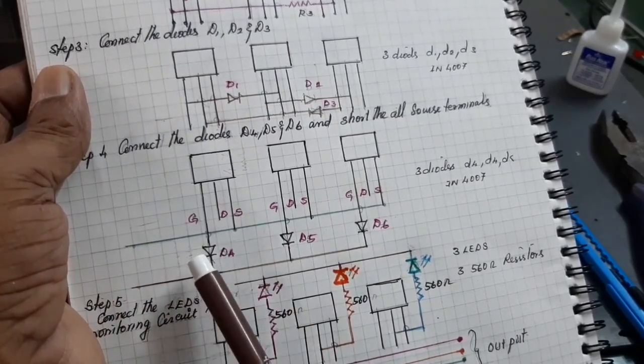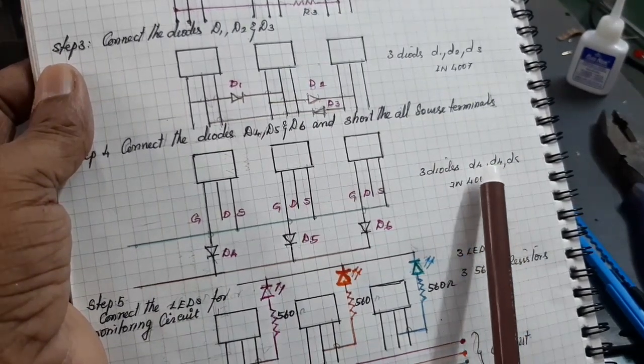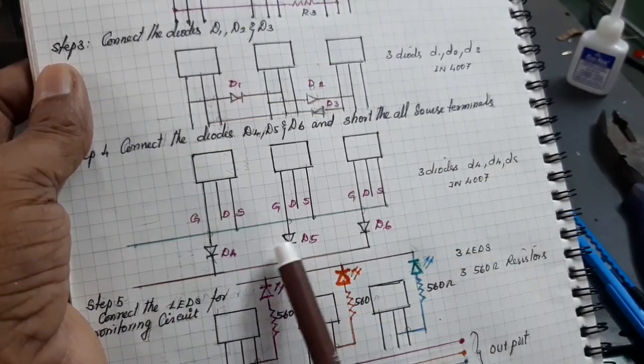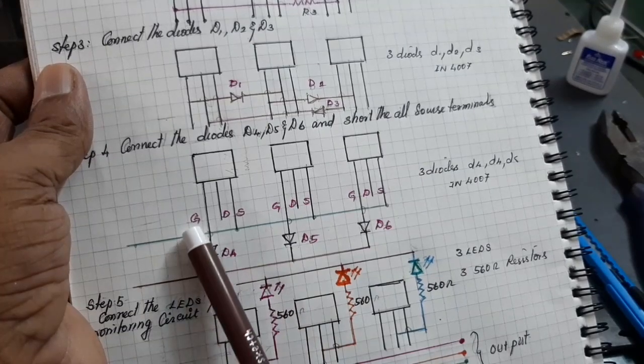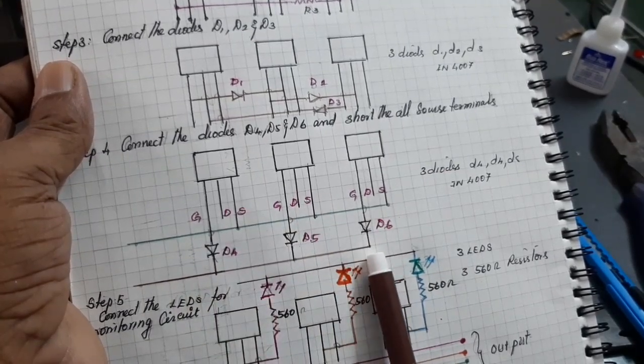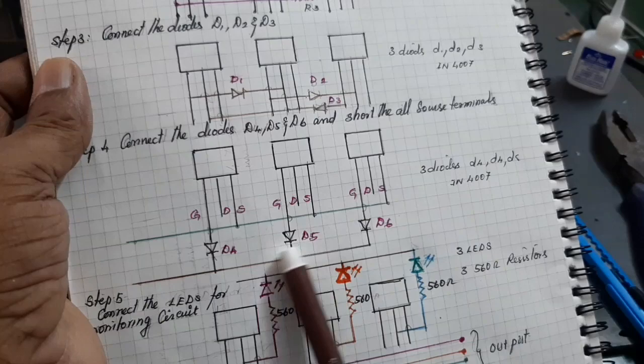Connect the diodes. Take 3 diodes D4, D5, D6. The 3 diodes are connected from the gate terminal. And other terminals are short-circuited and taken out.